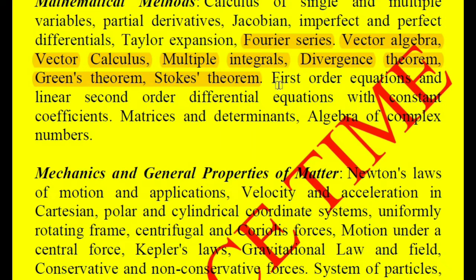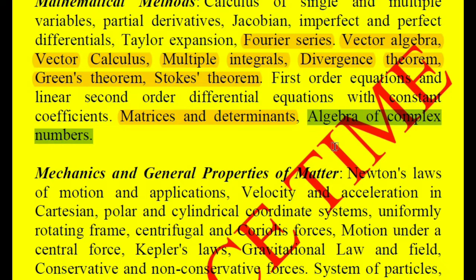Remember that Arfken and Kreyszig are two standard books. You can read those after completing the simpler books — otherwise you will not get much from them. Those two books are really good. Then matrices and determinants — you can read those from B.S. Grewal only, as that book is very simple and helpful for both beginners and advanced learners. Algebra of complex numbers can be read from Spiegel.